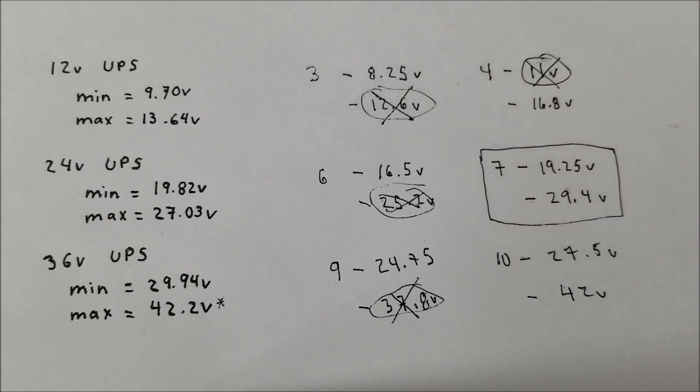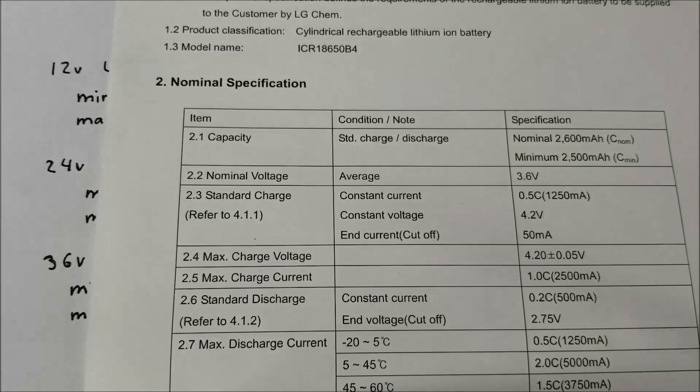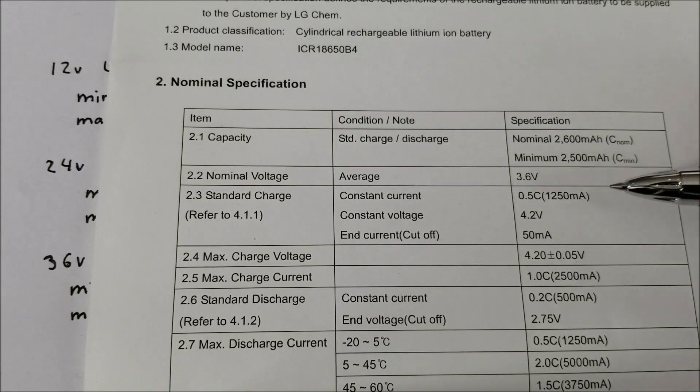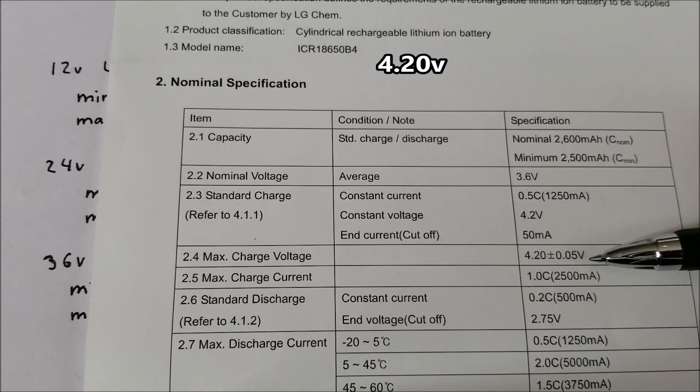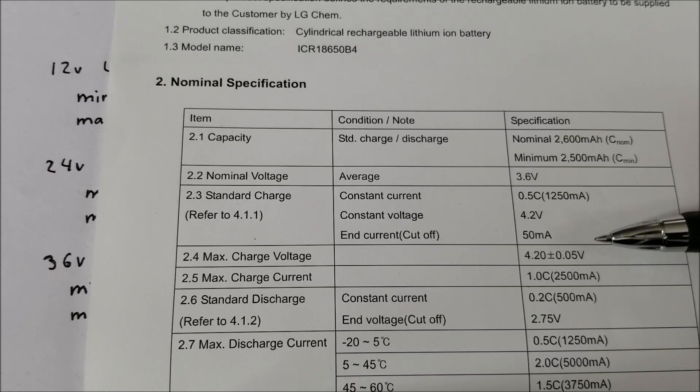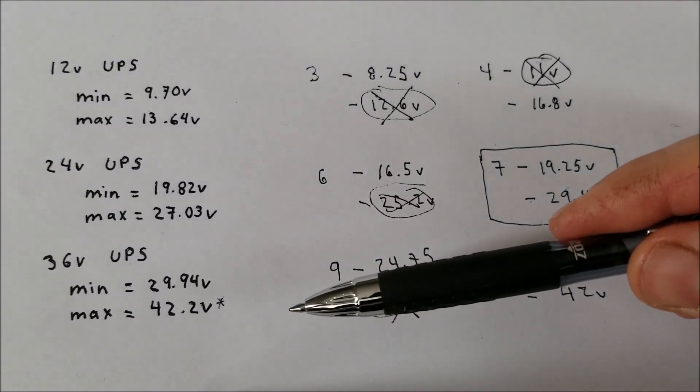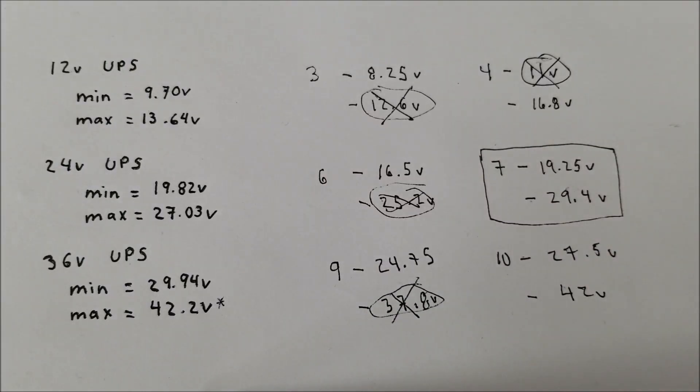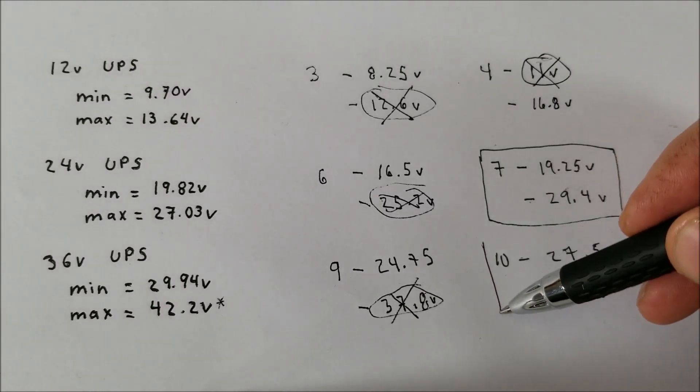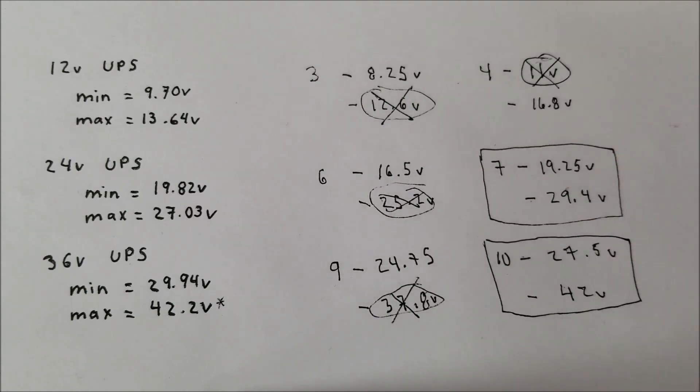Also, if we go back to the spec sheets, you'll note that it says 4.2V plus or minus 0.05V. So technically, these seem to be saying that it's safe to go up to 4.25V. And if it's 42.2V, we divide that by 10, so they'd be all charged at 4.22V. So it'd be a little bit above. So I think this is also a feasible solution.